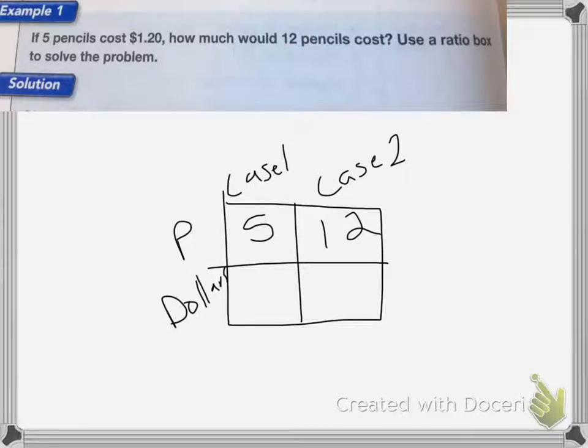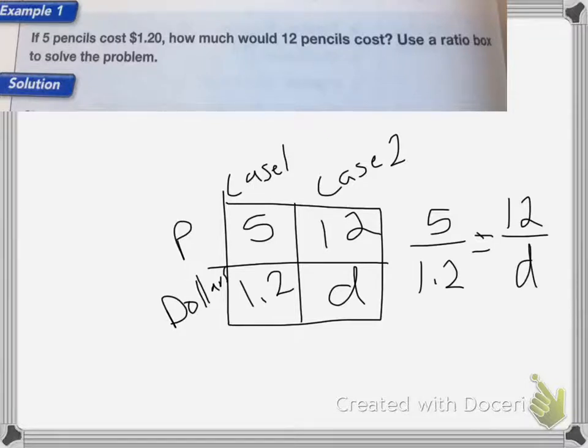Case 1 costs $1.20, and I don't know how much it will cost for 12 pencils. Now I can change this into a proportion. So I have 5 over 1.2 equals 12 over D. We use cross products, so 5D equals 12 times 1.2.